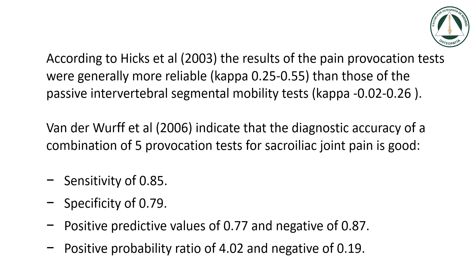According to Hicks et al. 2003, the results of the pain provocation tests were generally more reliable (kappa 0.25 to 0.55) than those of the passive intervertebral segmental mobility tests (kappa minus 0.02 to 0.26). Van der Werf et al. 2006 indicate that the diagnostic accuracy of a combination of five provocation tests for sacroiliac joint pain is good: sensitivity of 0.85, specificity of 0.79, positive predictive value of 0.77, negative predictive value of 0.87, positive probability ratio of 4.02, and negative of 0.19.